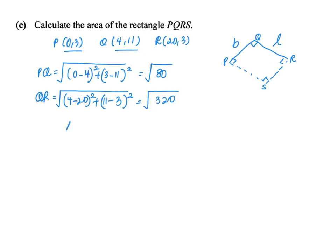So the area will be length times breadth, which is square root 320 times square root 80. And that gives me a total of square root 25,600, which leaves me with 160 square units.